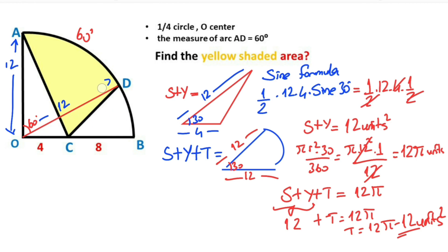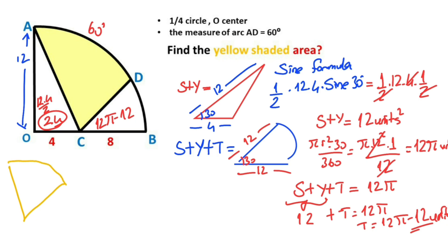Notice that this area we found is 12π minus 12. The right triangle area equals 12 times 4 over 2, which is 24 units squared. The yellow shaded area equals the quarter circle area minus the right triangle area minus region T.